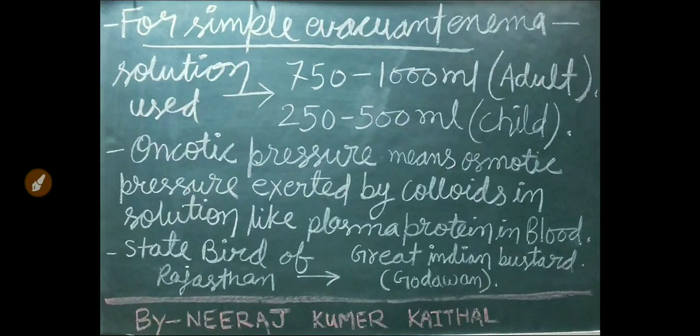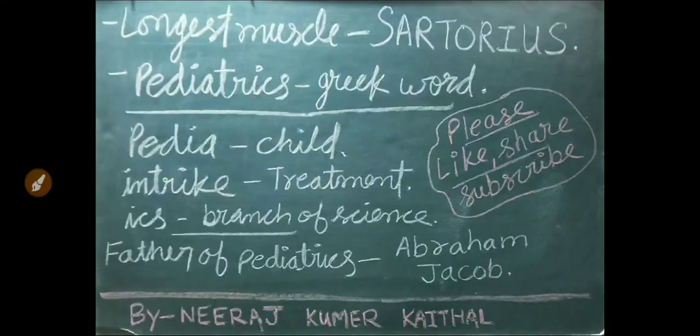The heat-regulating center of the body is the hypothalamus. For a simple evacuant enema, the solution used is 750 to 1000 mL in adults and 250 to 500 mL in children. Oncotic pressure is the pressure exerted by colloids in solution, such as plasma proteins in blood. State bird of Rajasthan is the Great Indian Bustard, also known as Godavan.